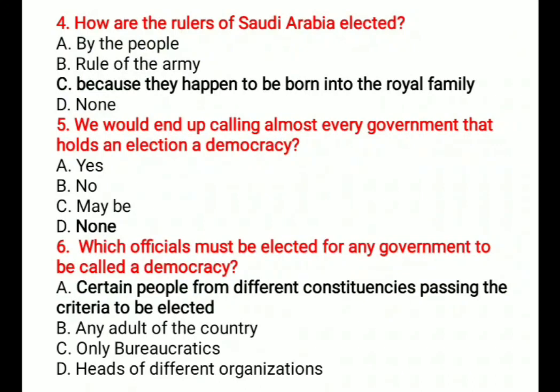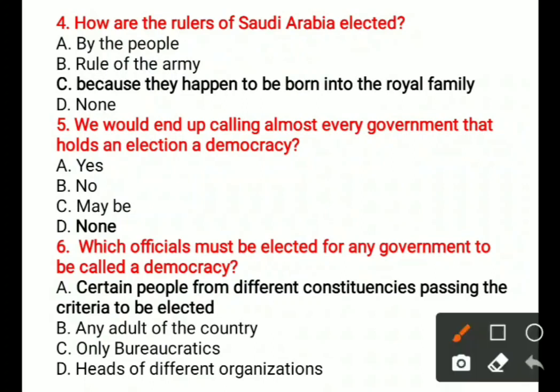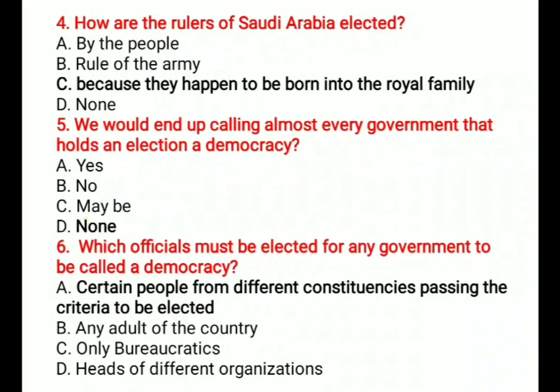Question 5: We would end up calling almost every government that holds an election a democracy — is it right? Options are: A) Yes, B) No, C) Maybe, D) None. The correct answer is A, None.